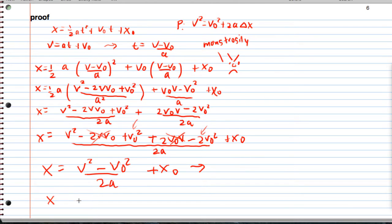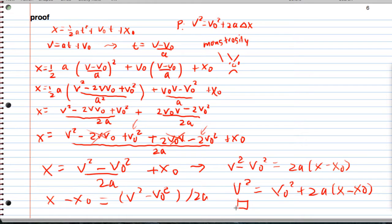Let's subtract here, so we're going to end up getting x minus x naught equals v squared minus v naught squared, all over 2a. And then when I multiply both sides by 2a, I'm going to get v squared minus v naught squared equals 2a times x minus x naught. Or when we simplify, v squared equals v naught squared plus 2a times x minus x naught. Quod erat demonstrandum.